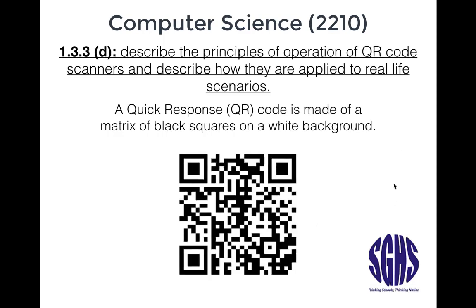A quick response code is made of a matrix of black squares on a white background, something like this. If you find an app or software that can scan this, you can scan it — it'll take you to a link. I'm not going to tell you what link; you'll just have to find out yourself.